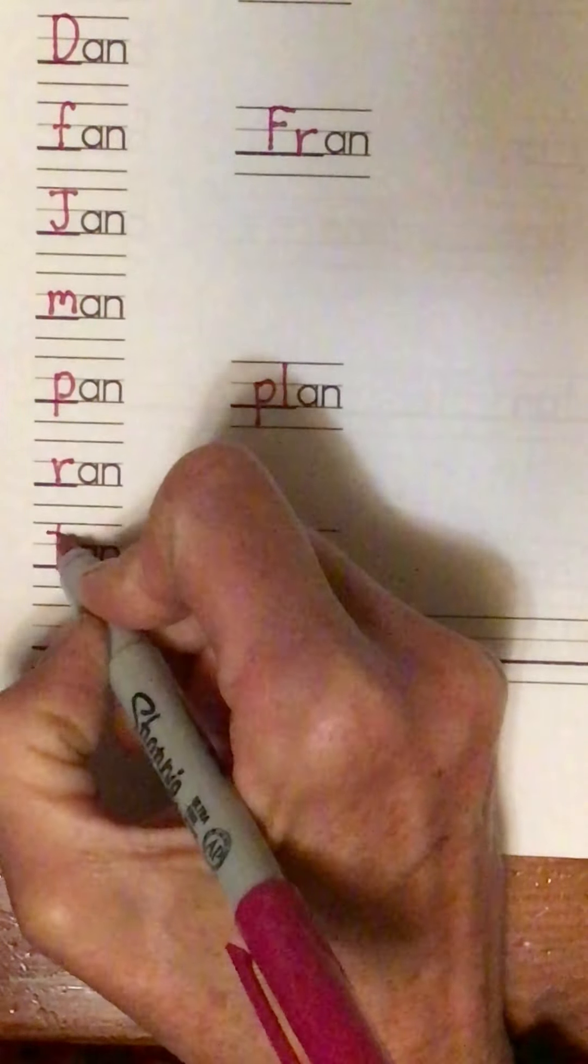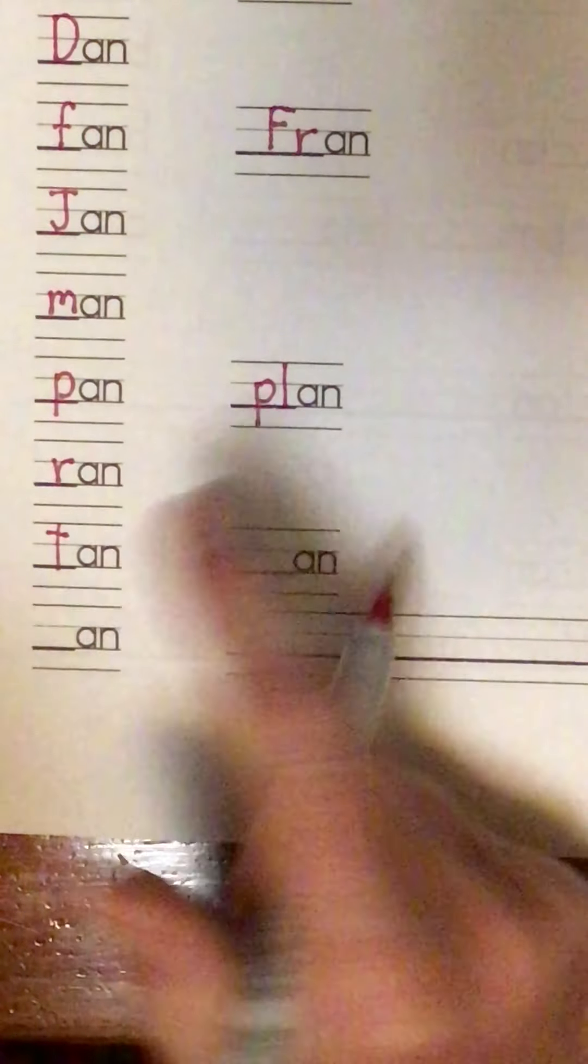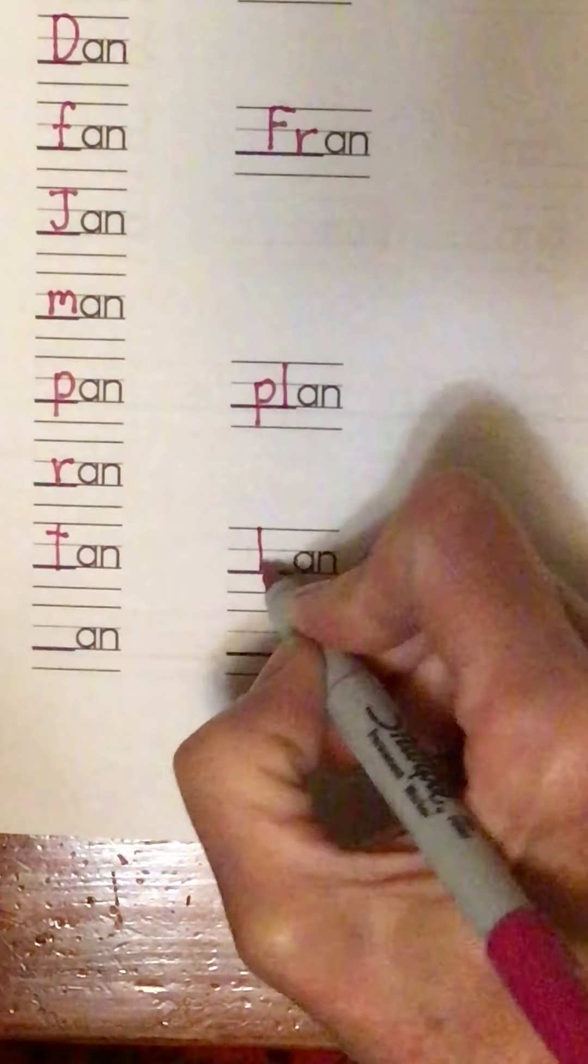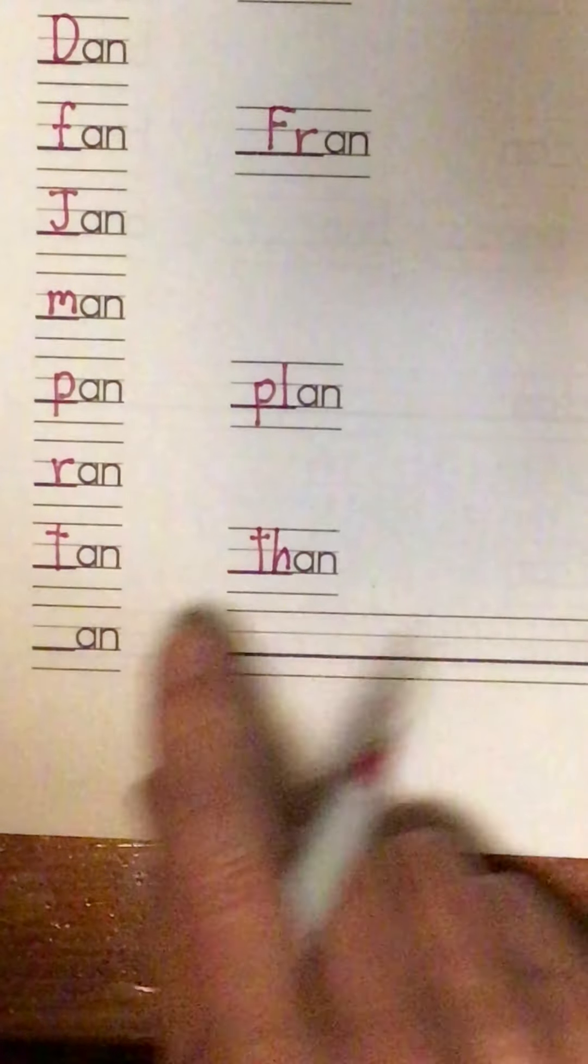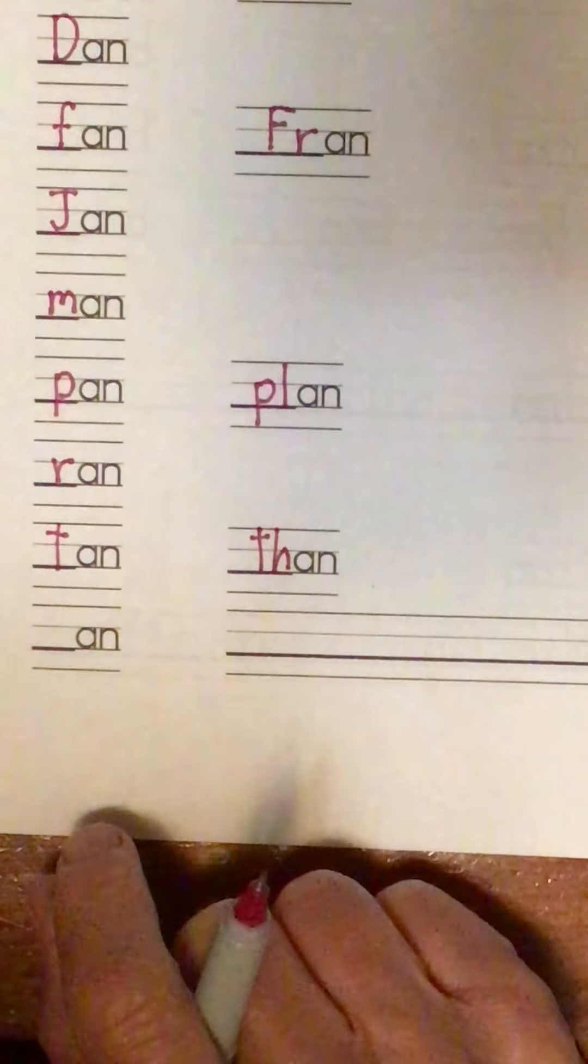Got a T, t, tan. And a T, H, th, th, than. He is taller than his brother.